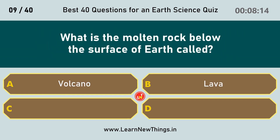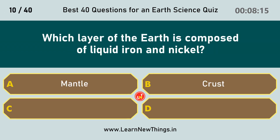What is the molten rock below the surface of Earth called? Magma. Which layer of the Earth is composed of liquid iron and nickel? Outer core.